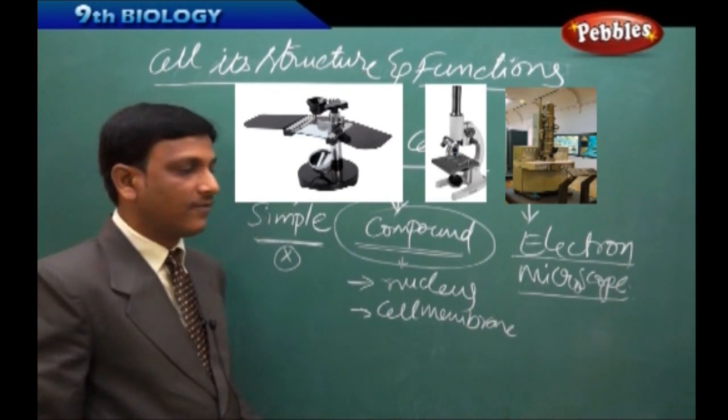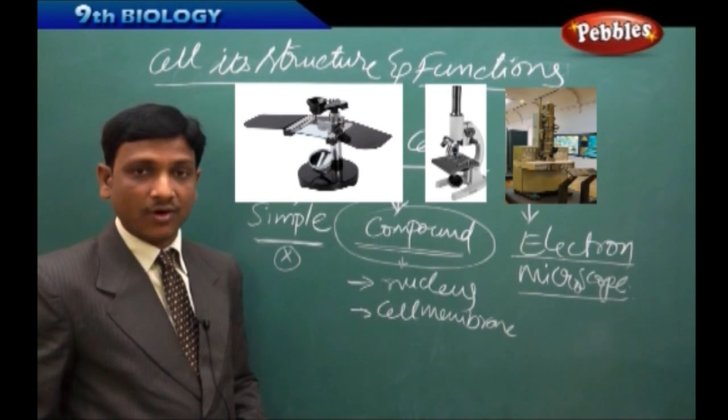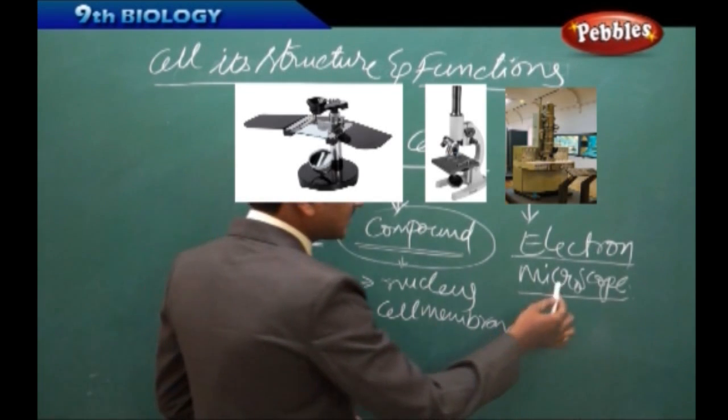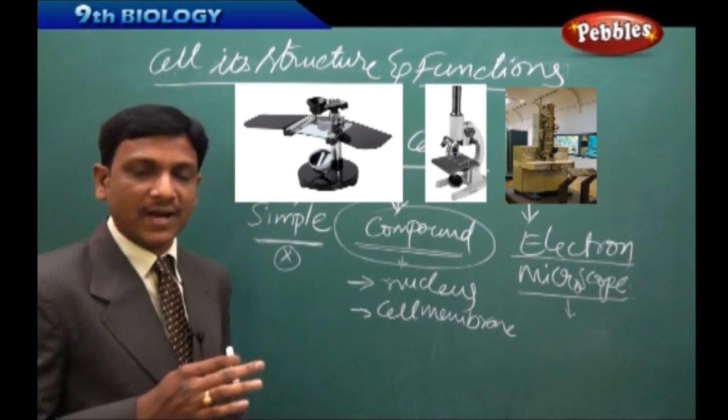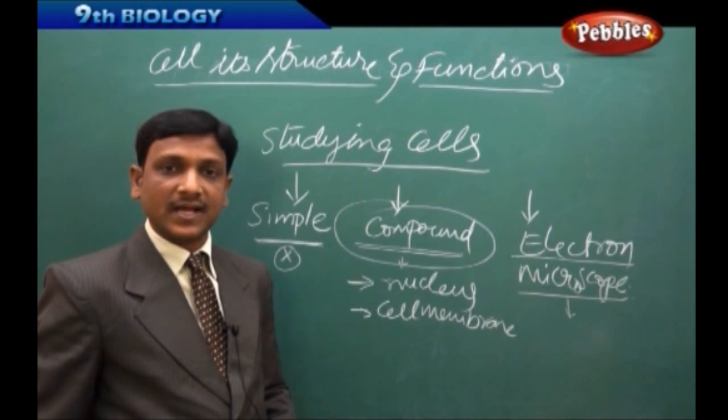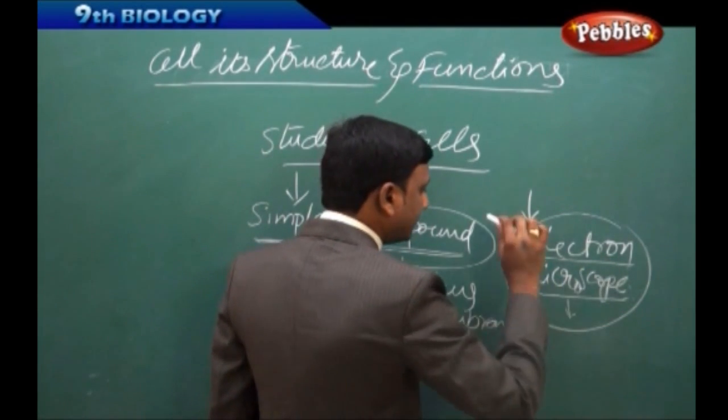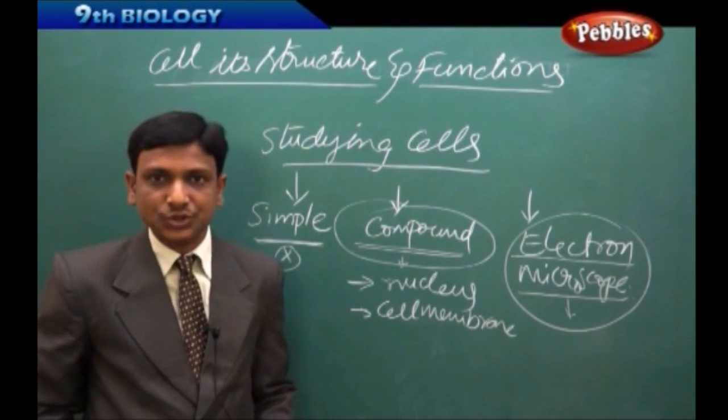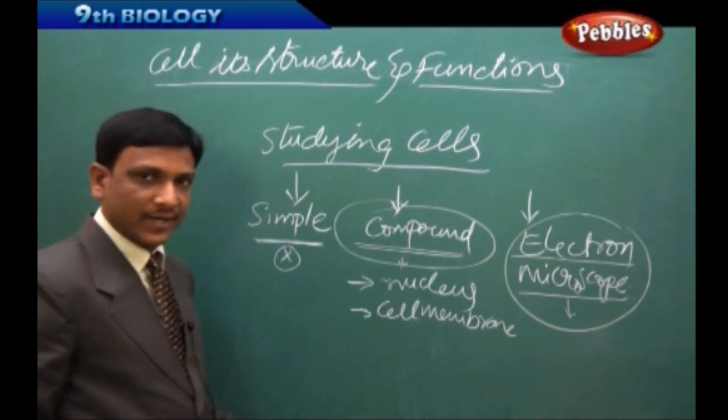So this is a very powerful microscope which is used by scientists or research scholars, professors to study the cells in detail. The cell organelles like mitochondria, chloroplasts, and the nucleus and nucleolus and all the other things can be studied by this electron microscope. So to study, to observe the cells, we need the special instruments like microscopes.